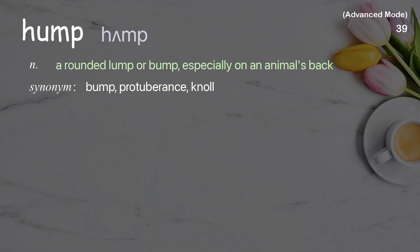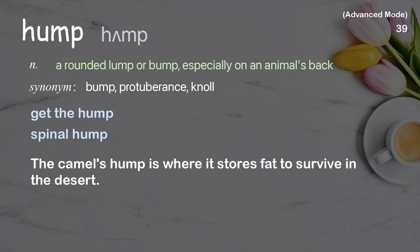Hump: a rounded lump or bump, especially on an animal's back. Examples: get the hump; spinal hump; the camel's hump is where it stores fat to survive in the desert.